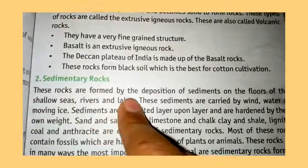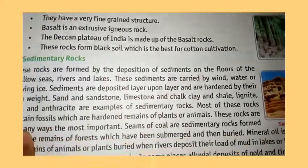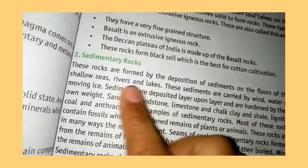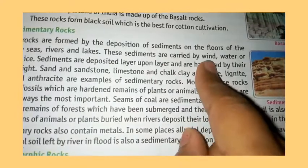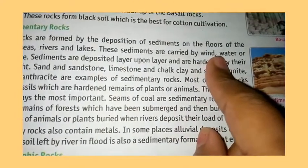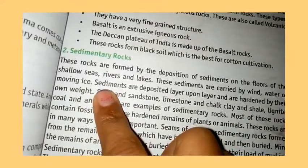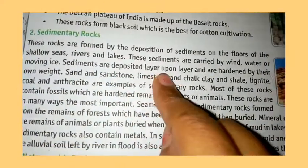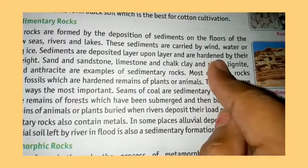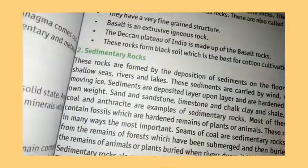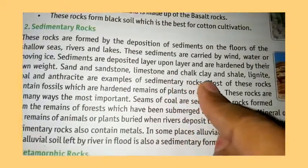The second type is sedimentary rock. These rocks are formed by the deposition of sediment from the flows of seas, rivers, and lakes. The sediment is carried by water and moving ice, deposited layer upon layer, and hardened. Examples include sandstone, limestone, chalk, and clay.